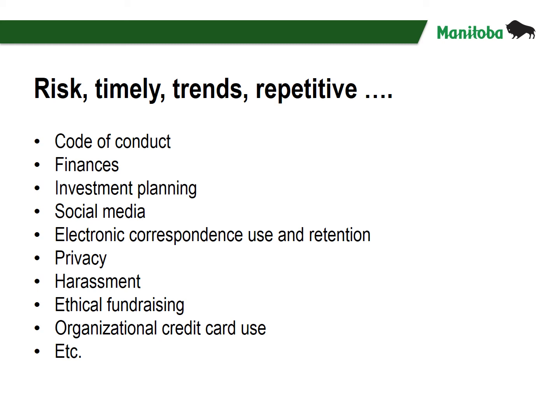Historically, we often saw a code of conduct or confidentiality policies in use. There is no shortage of policies related to finances and investment planning, but what is concerning today? Social media — a policy outlines what type of communication about an organization may be shared via a social media platform. Electronic correspondence use and retention. Privacy — FIPA, the Freedom of Information and Protection Act, will define what public bodies are to do, and your organization should define how it will protect personal information. Harassment, especially important if your organization has paid staff. Ethical fundraising. Organizational credit card use. Remember, setting policy for repetitive discussions will add efficiency.